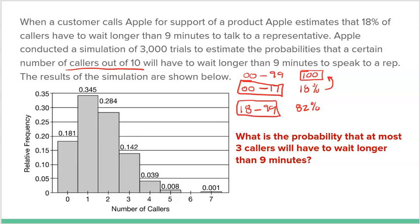Numbers 18 through 99 would be the 82% of phone calls that are not over nine minutes. So this must have been their scheme. Then what they did was look at 10 numbers. They didn't have to worry about unused numbers because they're using every single double-digit number possible, so there aren't any to ignore.